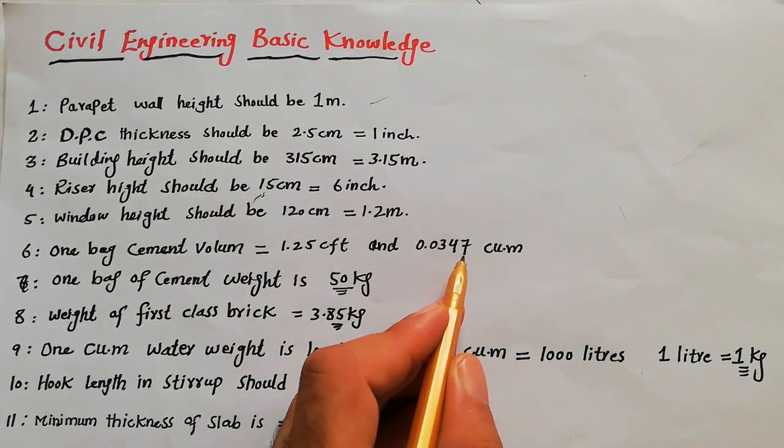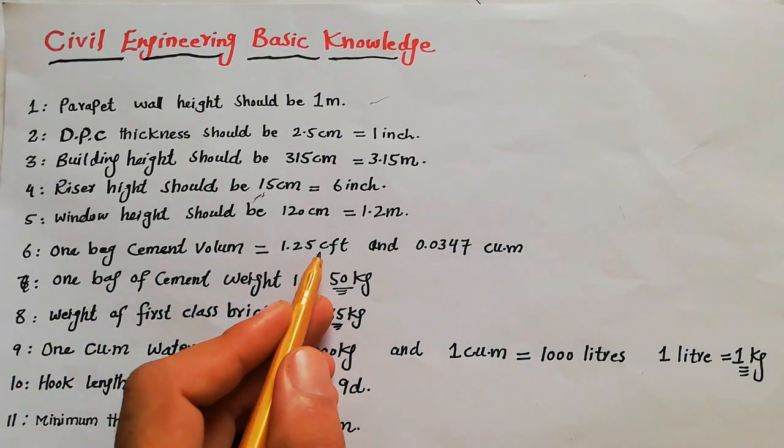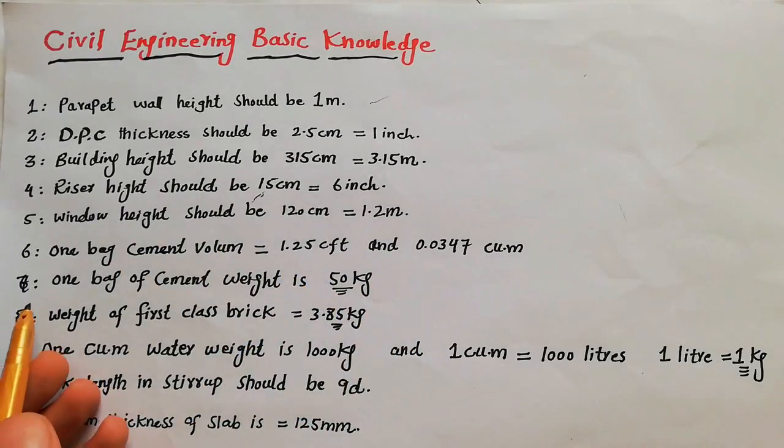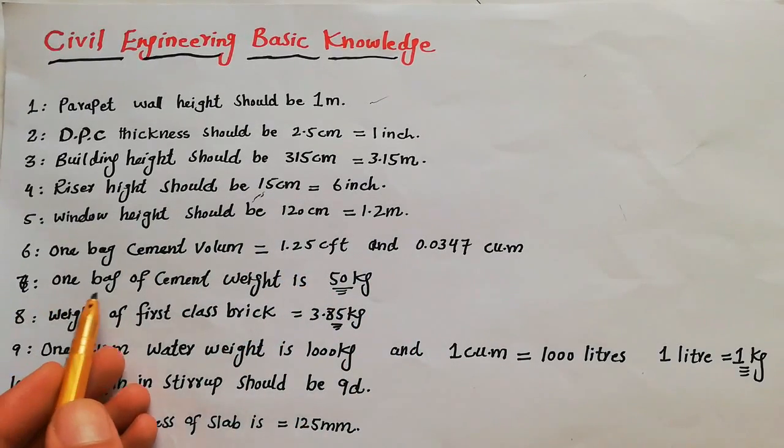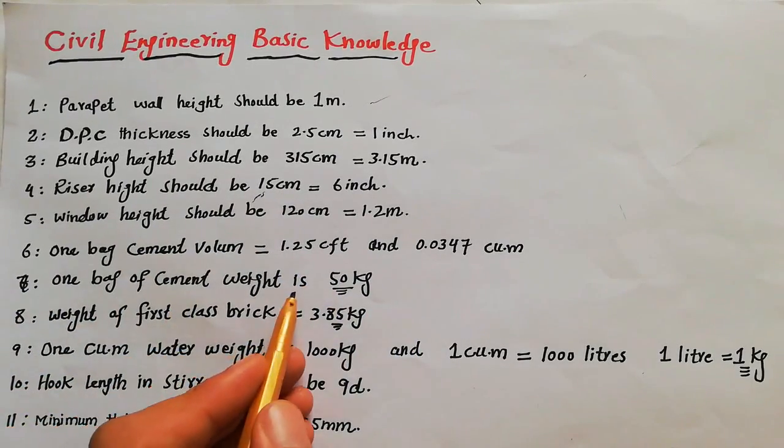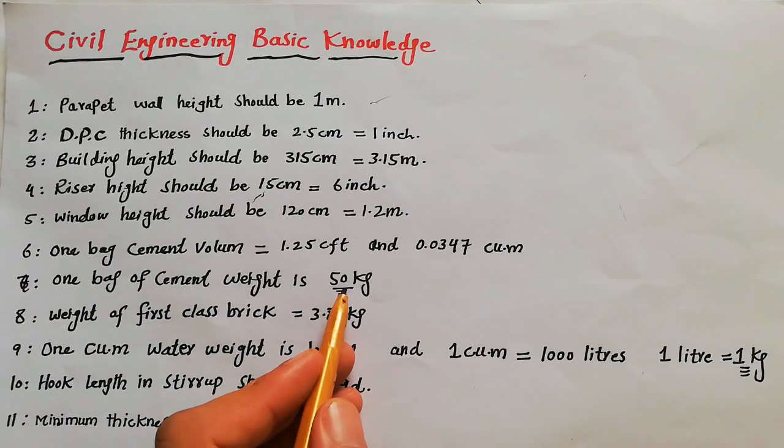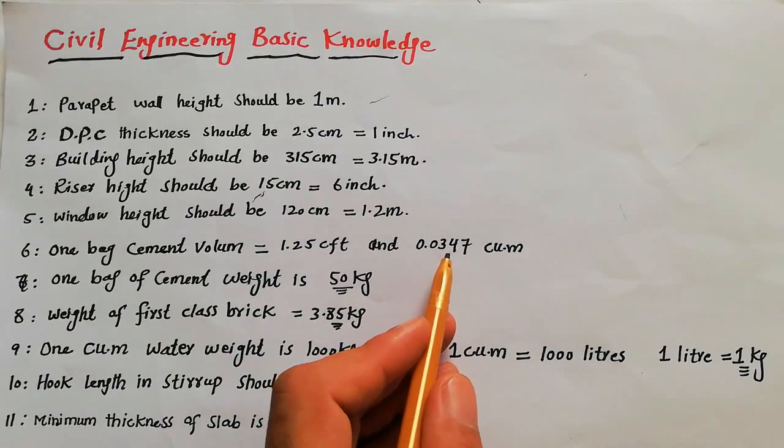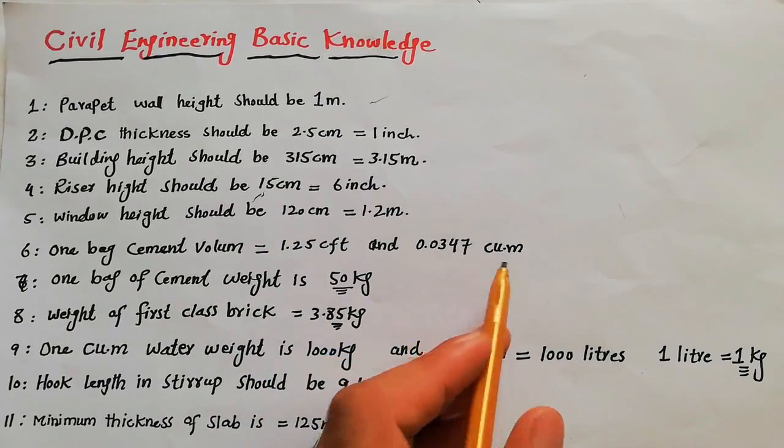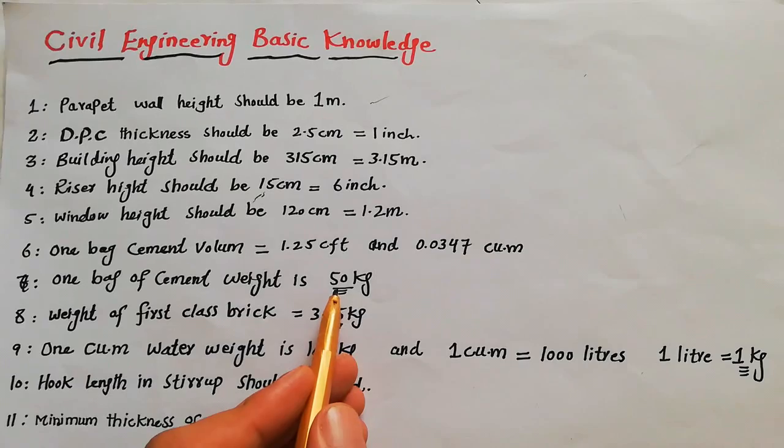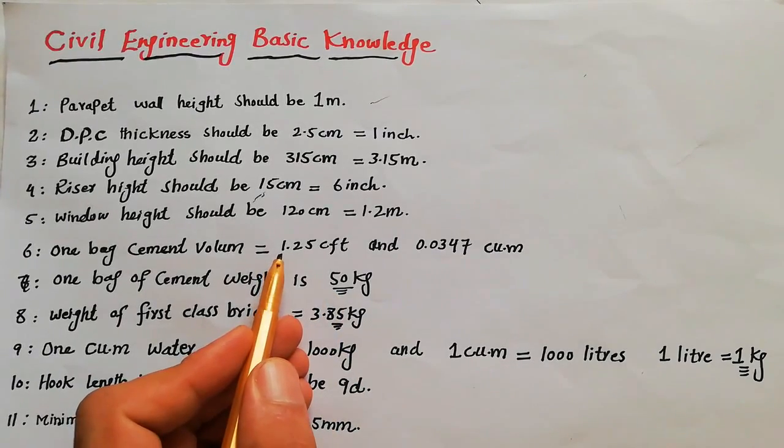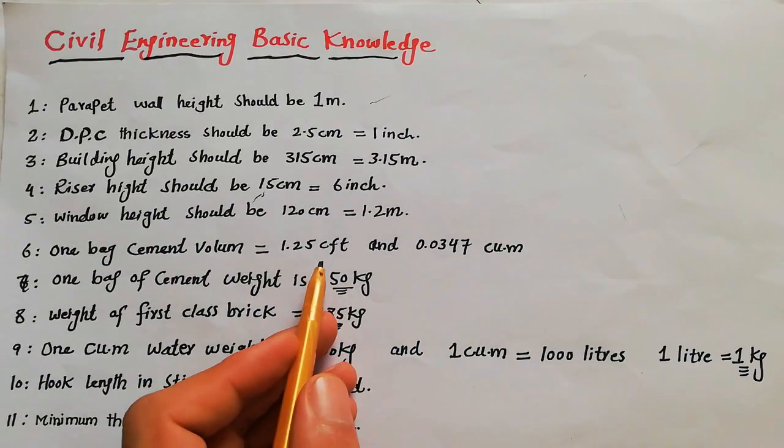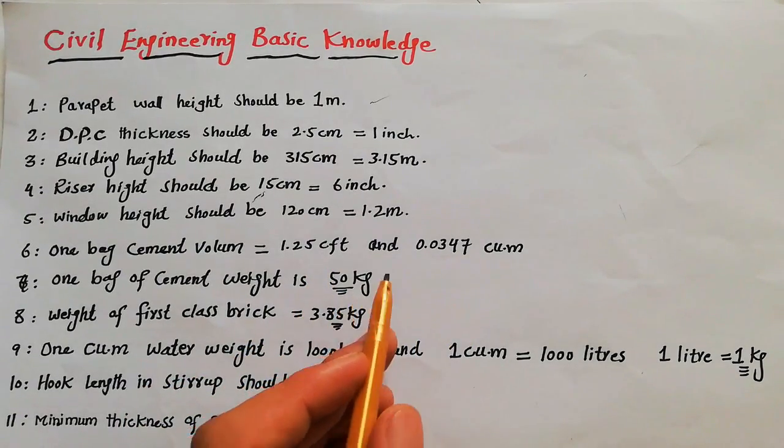Seventh: one bag of cement weight is 50 kilograms. If the volume is 0.347 cubic meters, it will be also 50 kg weight of cement. Or if the volume is 1.25 cubic feet, because this is in cubic meters and this is in cubic feet, for both weight of cement is 50 kg.